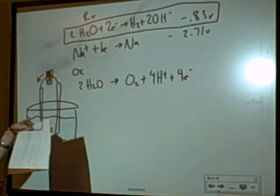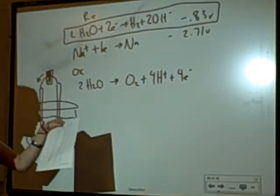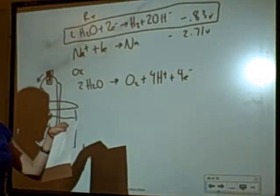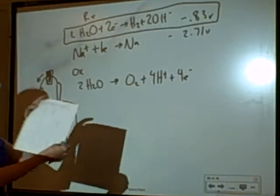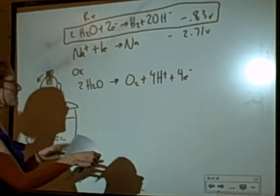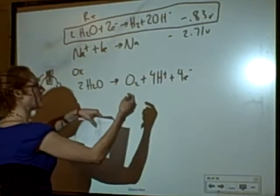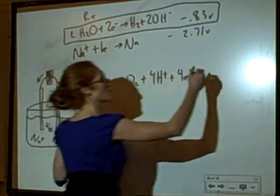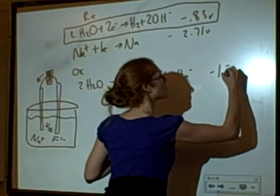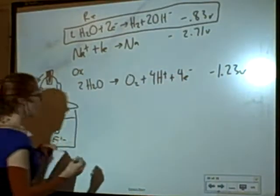By the way, this sheet is just straight off of the internet. It's one of those four pages you get with any AP test. Make sure you're really comfortable using this. This says 1.23 when it's written in this direction. So, it's going to be negative 1.23 volts.